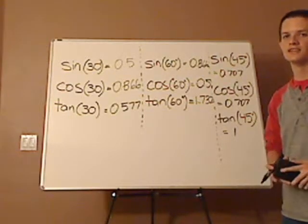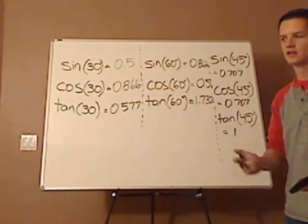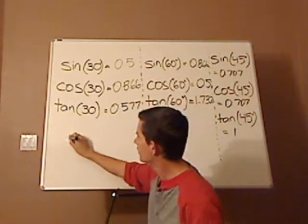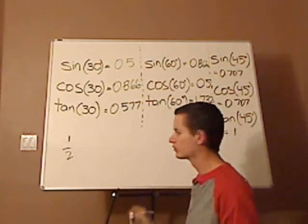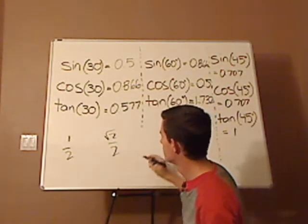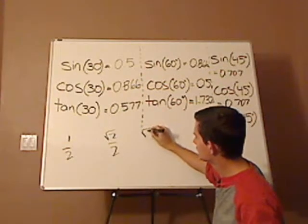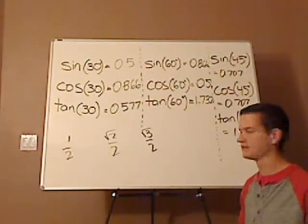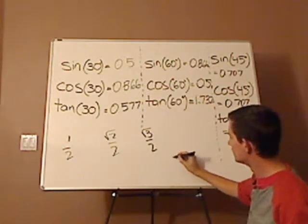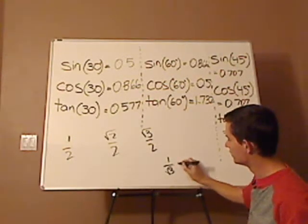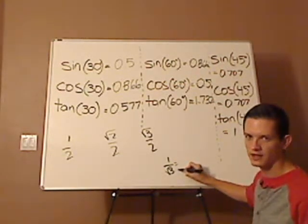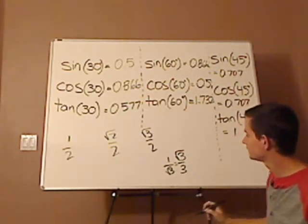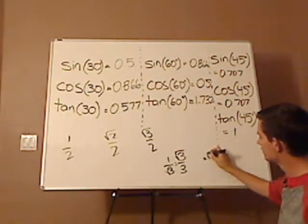So now you might be asked to find the exact form. So in that case, you have 1 over 2, or square root of 2 over 2, or square root of 3 over 2. And then you have what you might see in the tangents: 1 over square root of 3, and that is the same when you multiply the top and bottom by square root of 3, you get square root of 3 over 3. Or you might just simply see square root of 3.